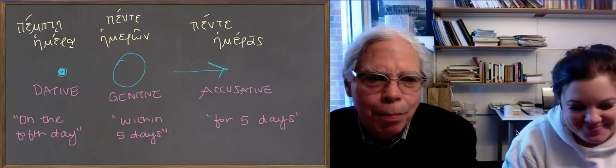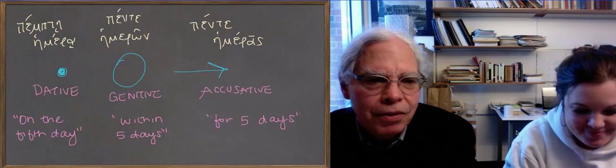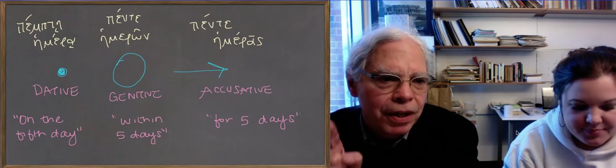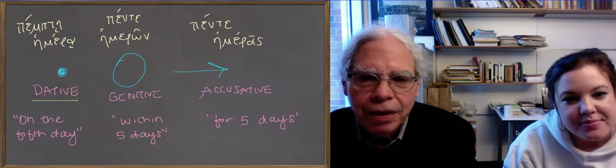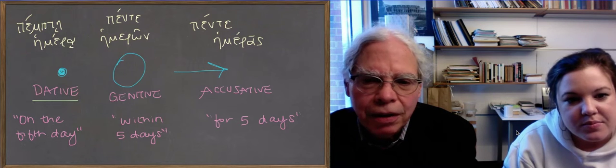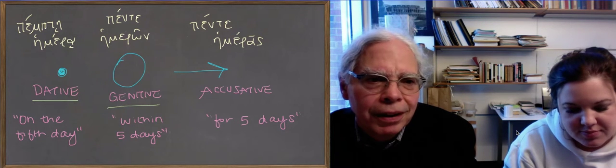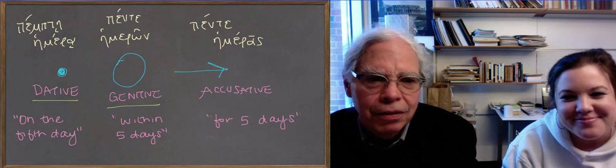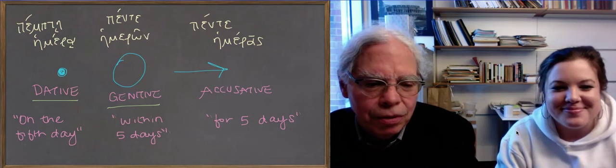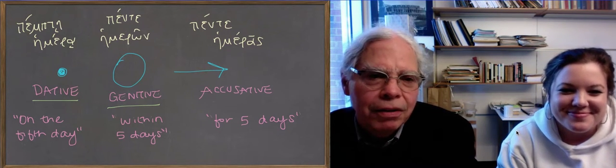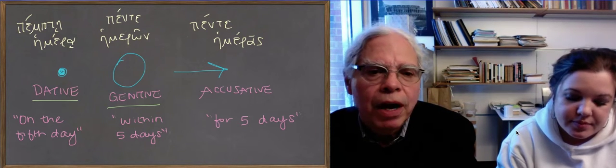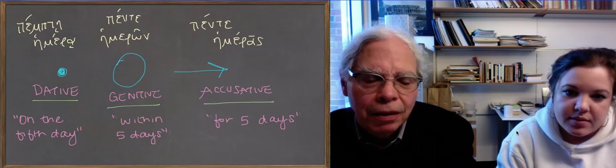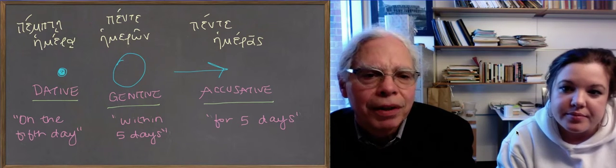A dot is a point in time. So it's one moment, that's the dative of time, on the fifth day. A circle is kind of blobby. Within five days, I'll get done with my thesis. You're just scatter shot. And the arrow is a space of time over which something will happen. For five days, I was in the hospital. Stuff like that.